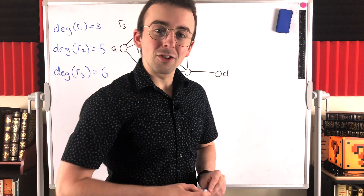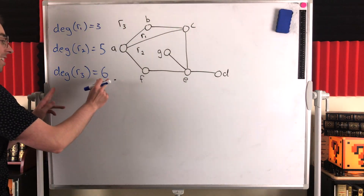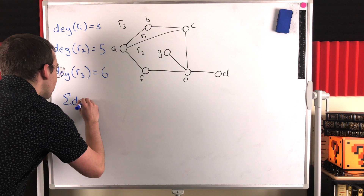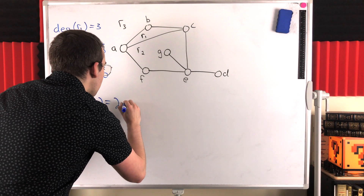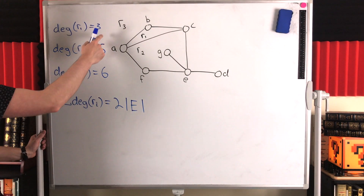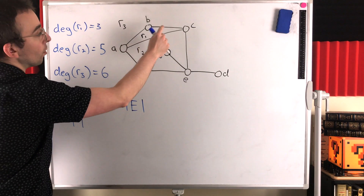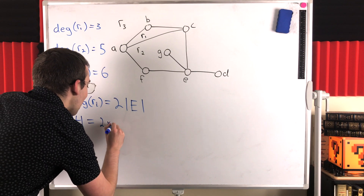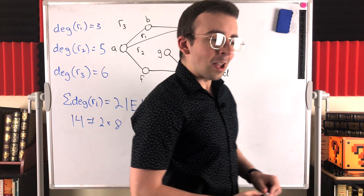Now, the problem with this definition of degree is that several articles present this definition of boundary and degree of a region, and then claim that the degree sum of the regions of a plane graph — if we add up the degrees of all the regions — will be equal to two times the number of edges in the graph. Let's see if that holds. We've got three plus five plus six, that's 14. And how many edges are in our graph? One, two, three, four, five, six, seven, eight. So 14 should equal two times eight, which is 16. That doesn't work — 14 isn't equal to 16.